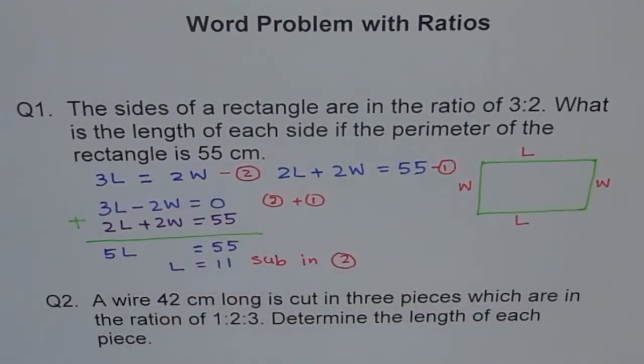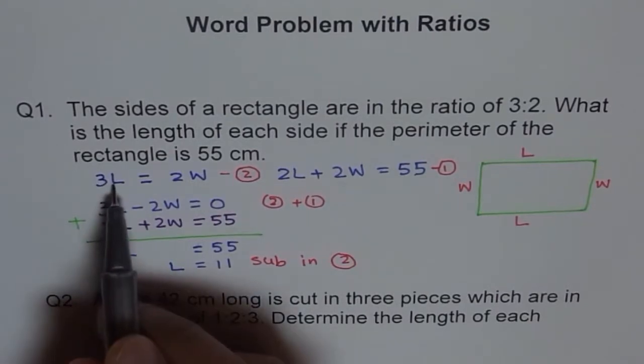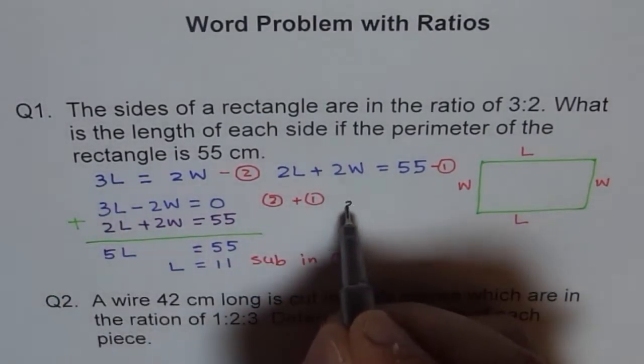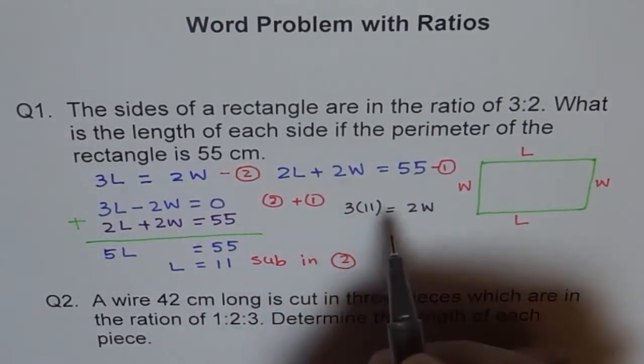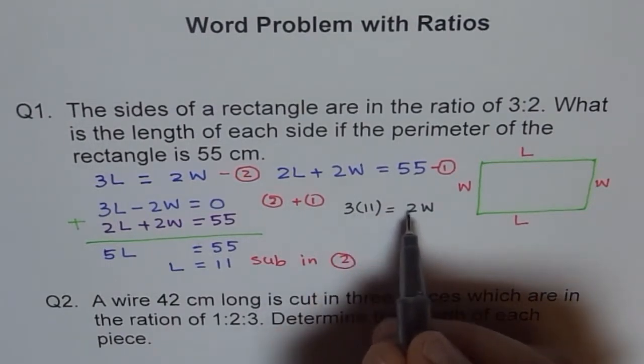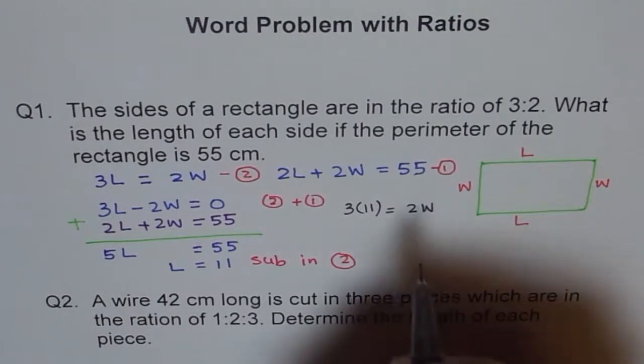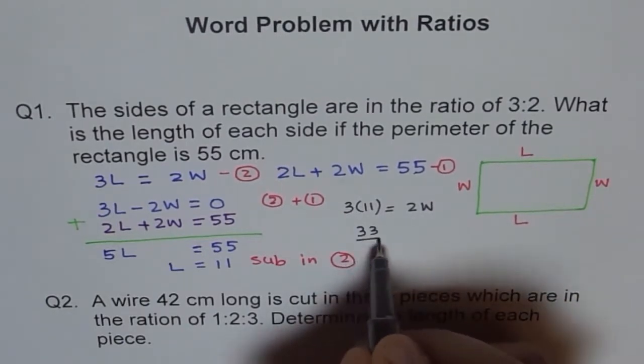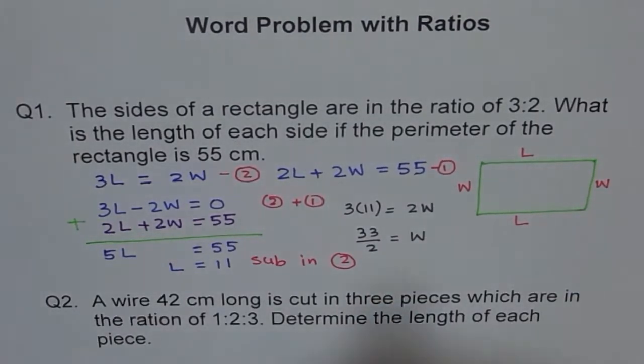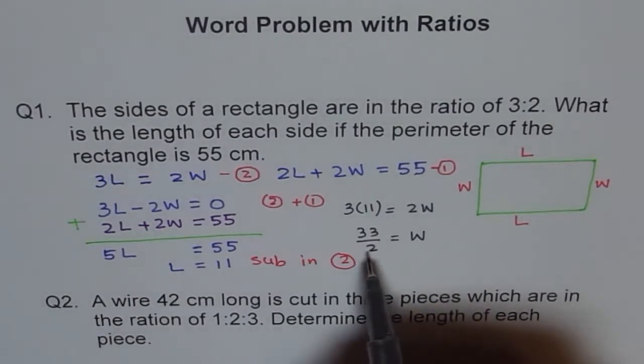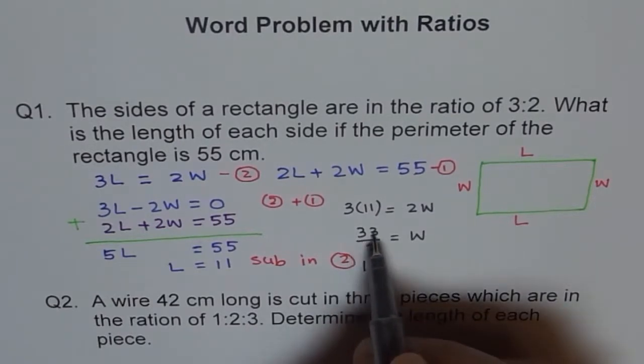So let me do this part here in a different ink. We got length is 11, so we will substitute 11 here. So we get 3 times 11 equals to 2W. So 3 times 11 is 33 divided by 2 is W. So we get 33 divided by 2 equals to our width W.